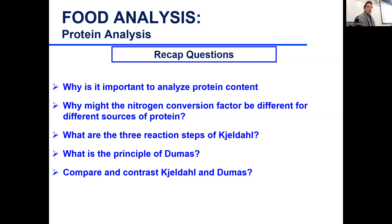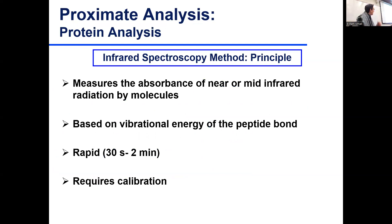Both Kjeldahl and Dumas are often used to calibrate quick methods of analysis like IR, so the IR instrument is often calibrated using either Kjeldahl or Dumas for protein analysis using NIR or mid-IR. Basically you measure absorbance at near or mid-infrared by the molecules — in this case it's the vibration of the peptide bonds. Mid-IR is often used with dairy, especially milk, and near-IR is used for all different types of foods, a lot of them powders. It's quick and high throughput but needs accurate calibration, and sometimes there are drifts, so calibration is done often to ensure reliability.